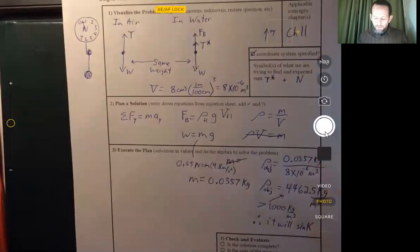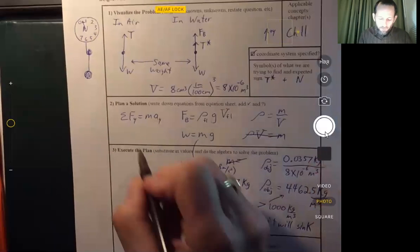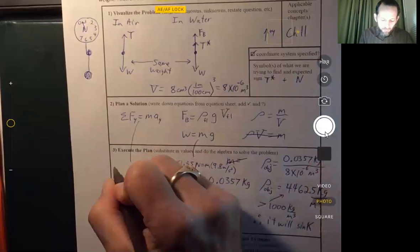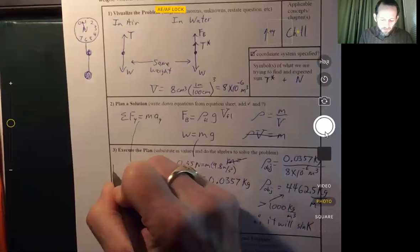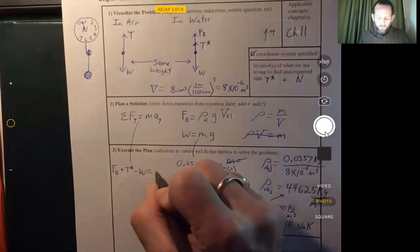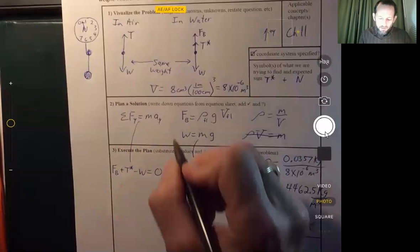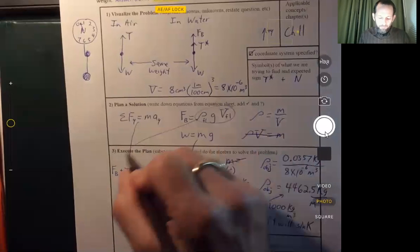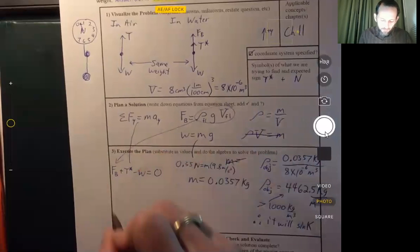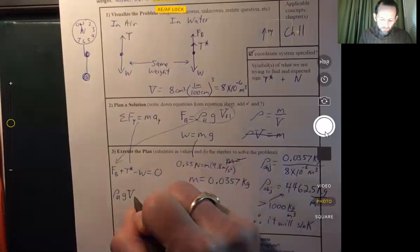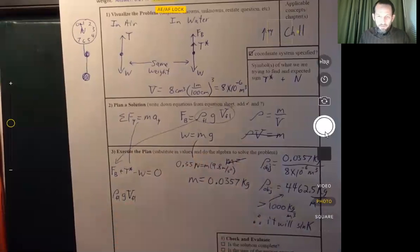Have our buoyant force equation, I'm sorry, our second law equation here. I'm just going to say buoyant force plus T star minus the weight equals zero. And then we're going to take this buoyant force expression, and we're going to put that in there. Let's go ahead and do that. So the density of the fluid times g times the volume of the fluid displaced.